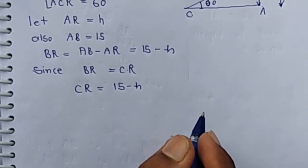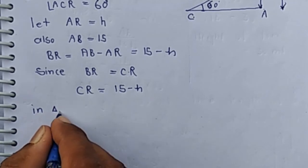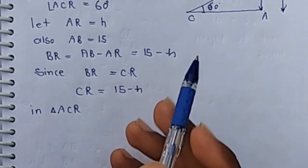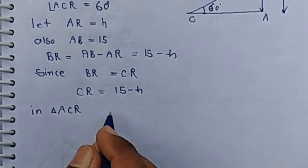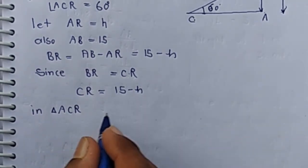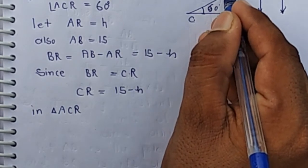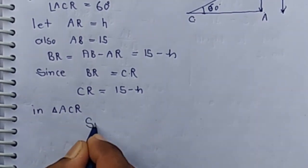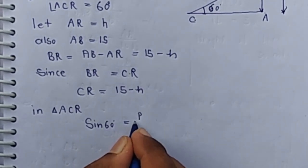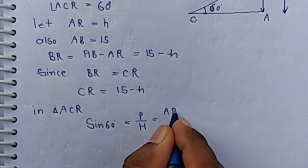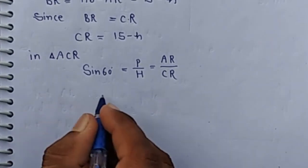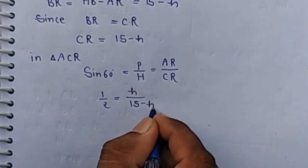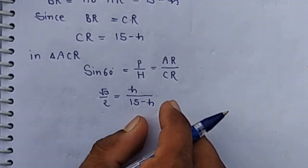Now in triangle ACR, we have to find the value of H. In triangle ACR it is H and it is 15 minus H. Apply sin 60 because perpendicular and hypotenuse is given. Then sin 60 equals perpendicular upon hypotenuse means AR by CR. Sin 60 is root 3 by 2, AR equal H and CR is 15 minus H.